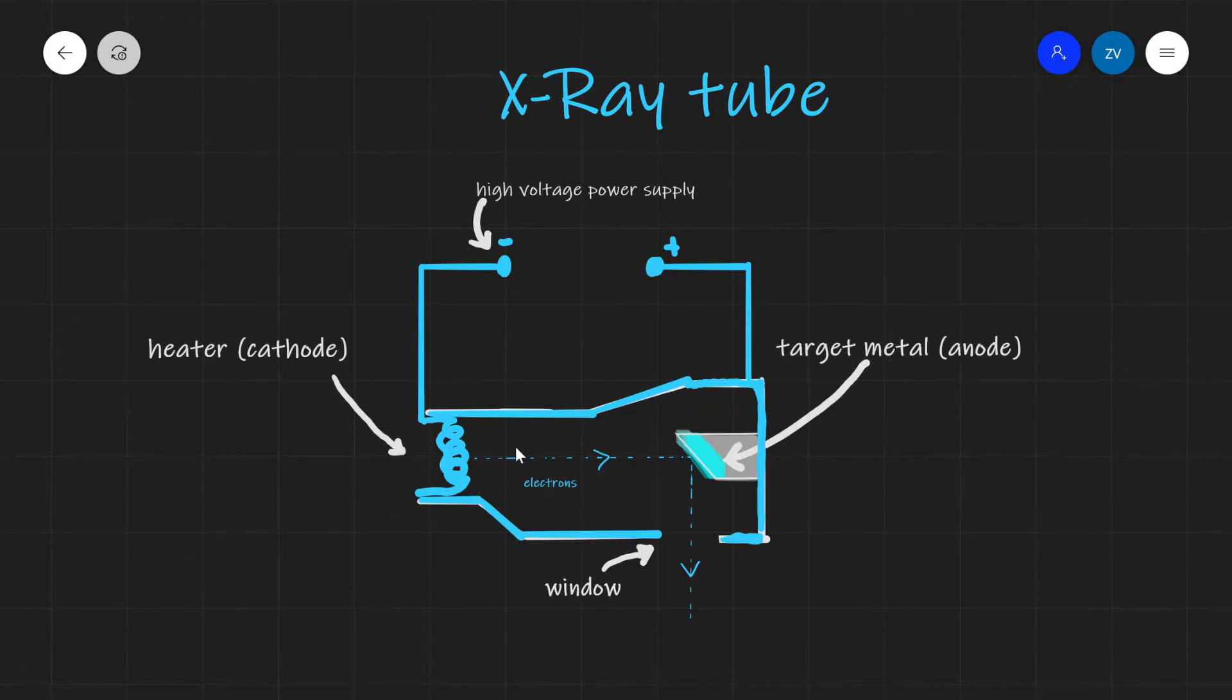Once the electrons are decelerated, they lose a lot of energy and only 1% of their kinetic energy is converted to x-rays. The x-rays will be emerging out of this window. And this beam over here is actually your x-ray beam.